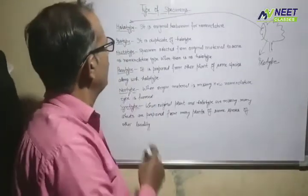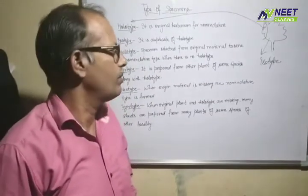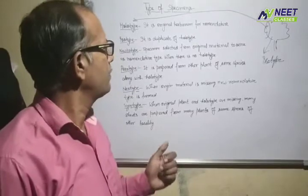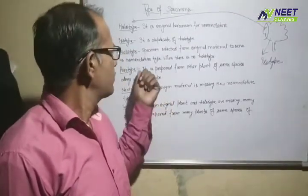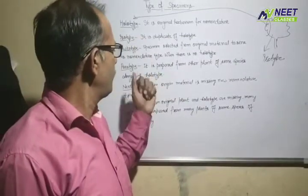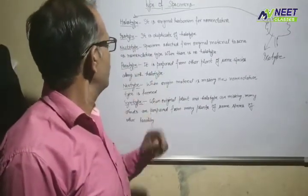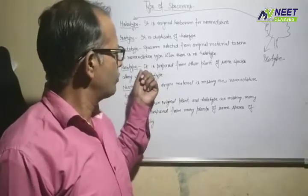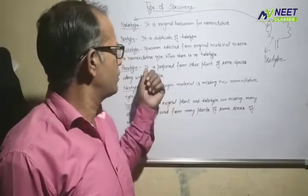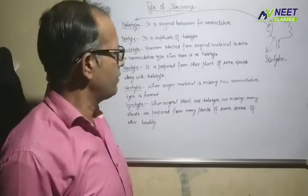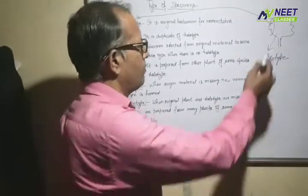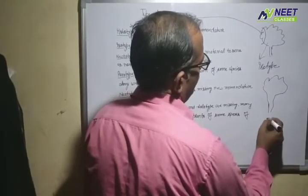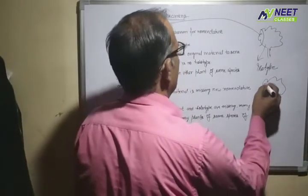The next type is the Parotype. Parotype is prepared from other plants of the same species. The same plant is not made by the same plant; it is made by another plant, and the other plant is used by the other plant.